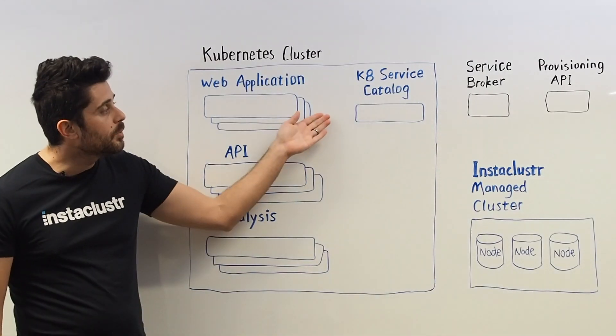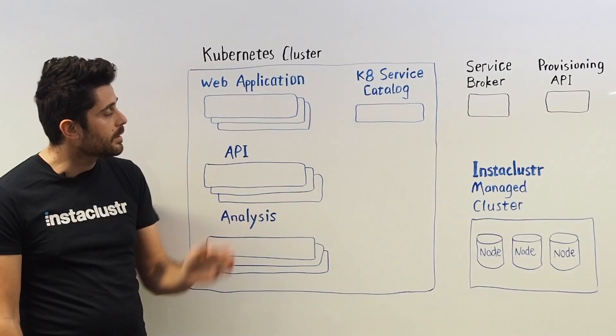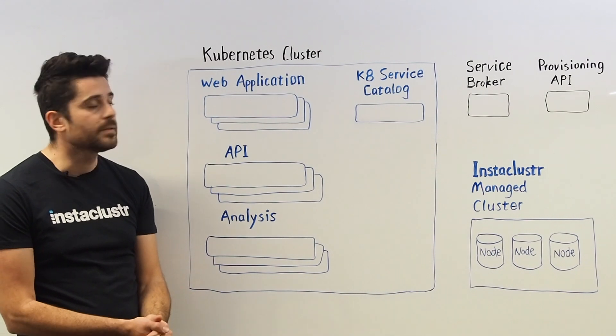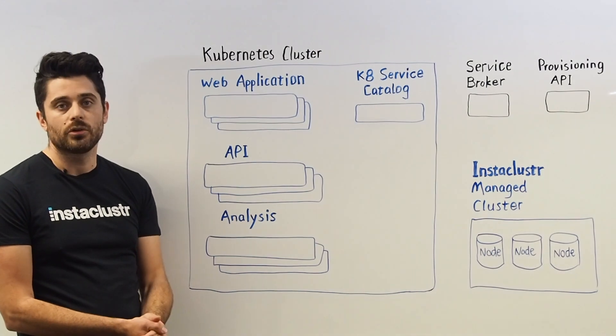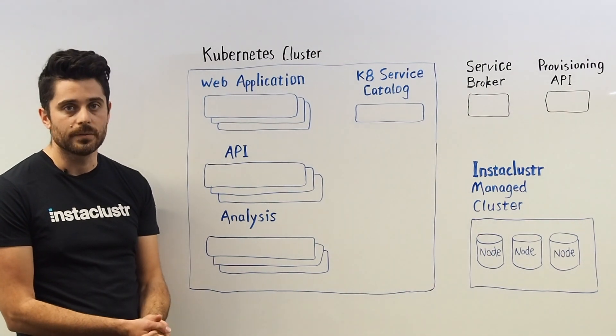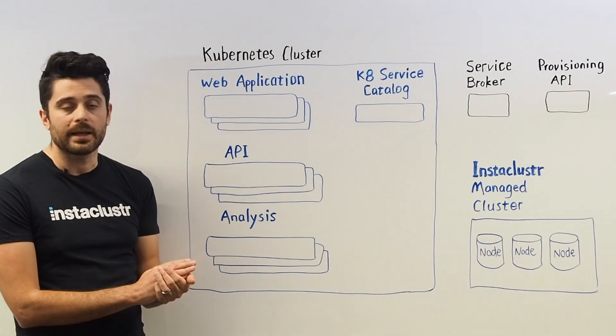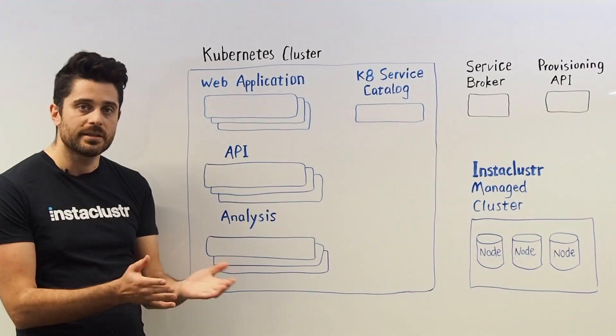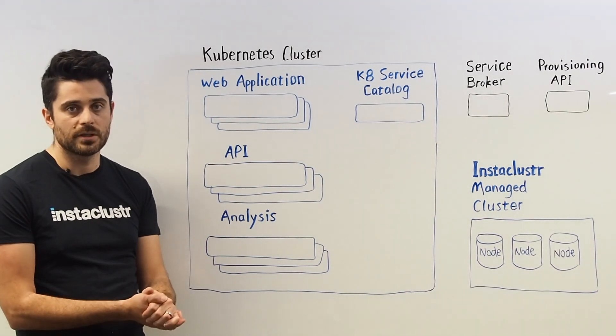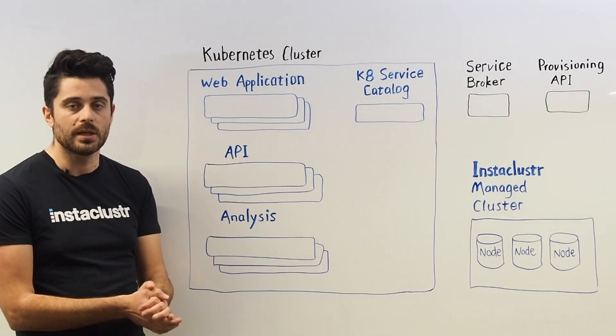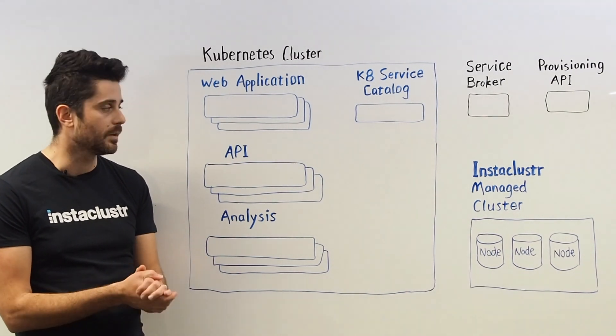The first step would be to connect and install the Service Catalog into your Kubernetes environment. The second step would be to query that catalog and see the list of available services that you might want to use in your Kubernetes environment.